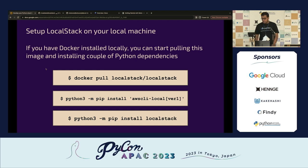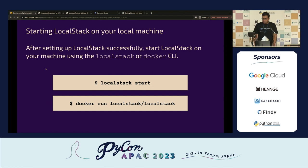Setting up LocalStack on your machine takes three steps. First, pull the LocalStack Docker image — it's been pulled over 180 million times. Second, optionally install the AWS Local CLI wrapper. Third, install the LocalStack CLI. But if you want to go slim, just pull the Docker image and you're good. Once installed, just run 'localstack start' or, without the CLI, run Docker with 'localstack/localstack' and you're good to go.